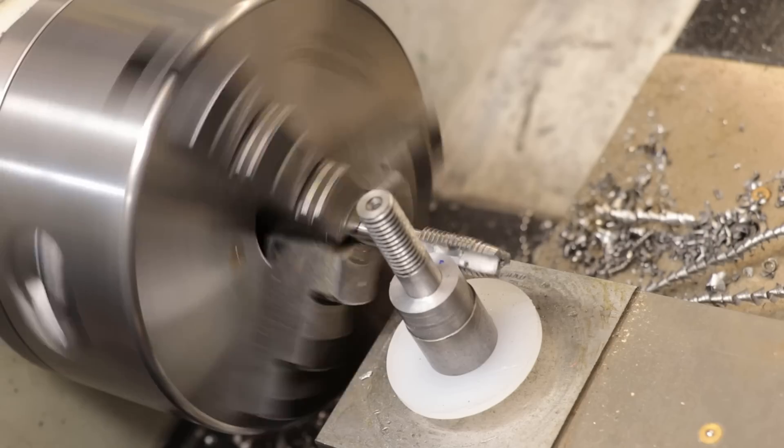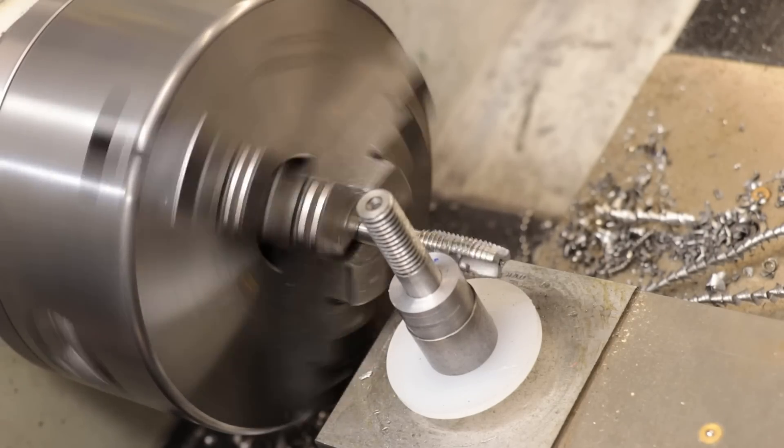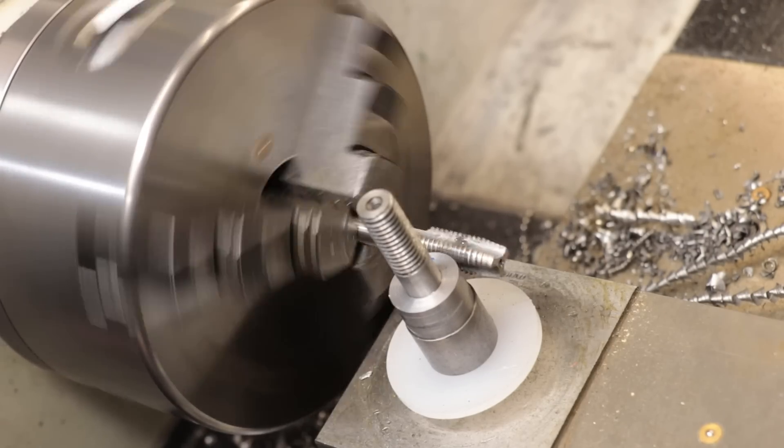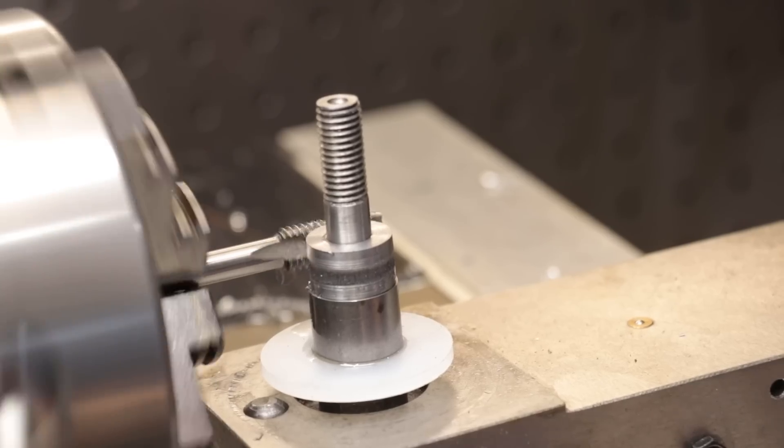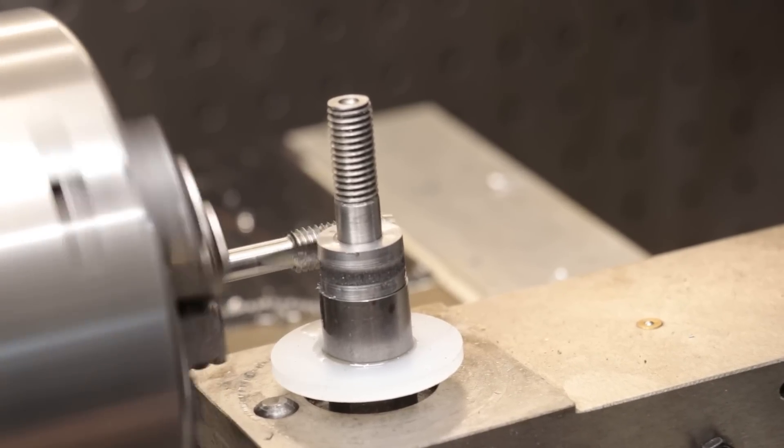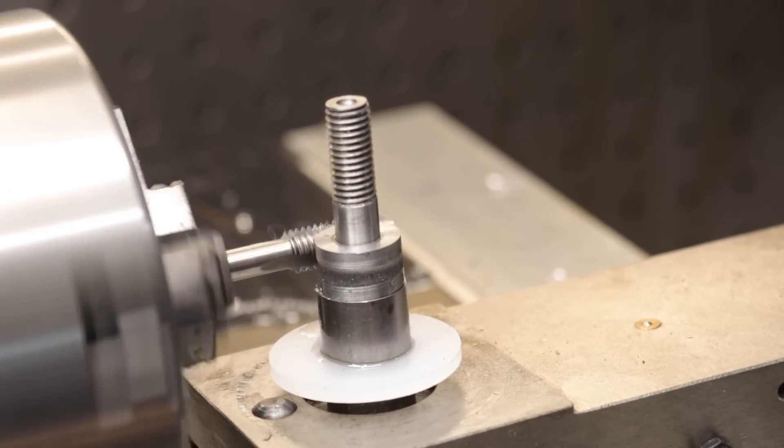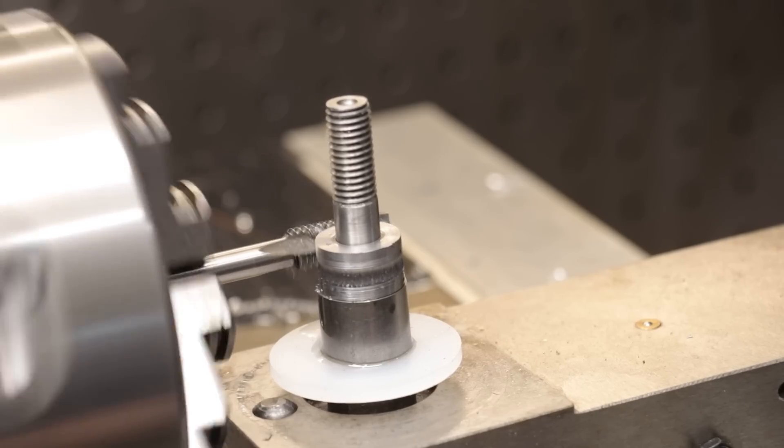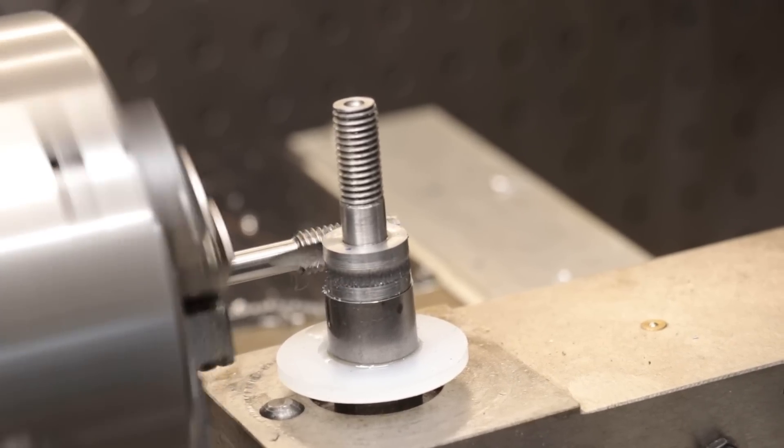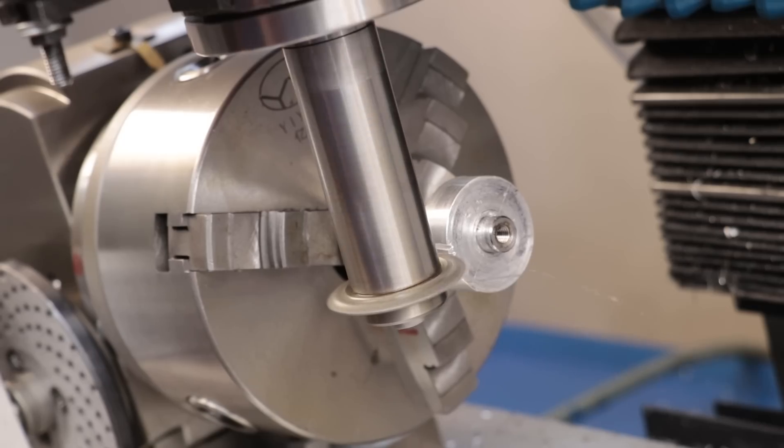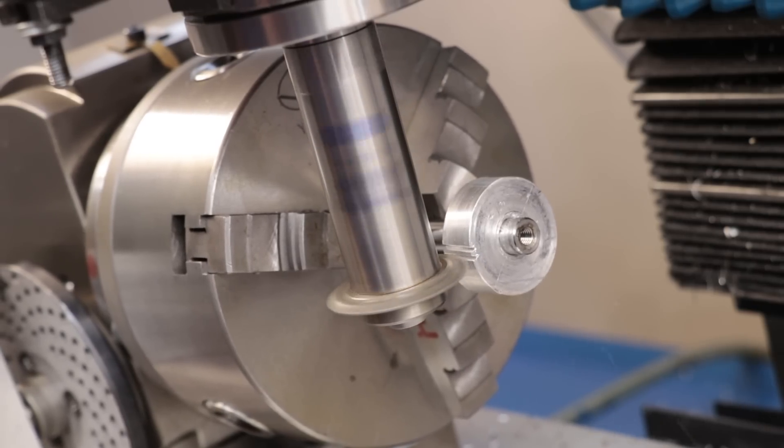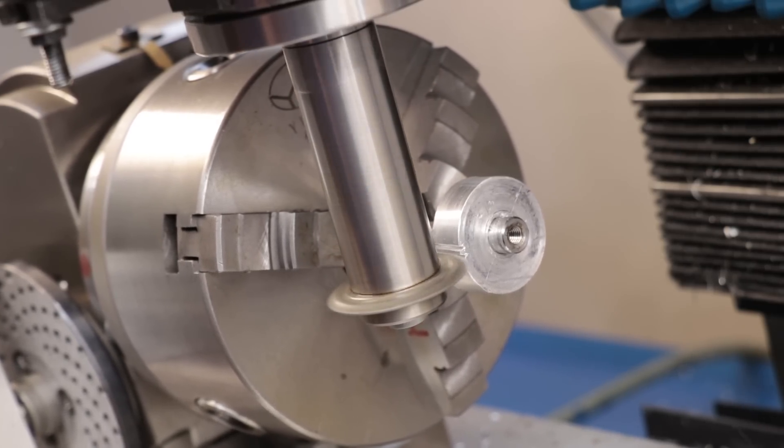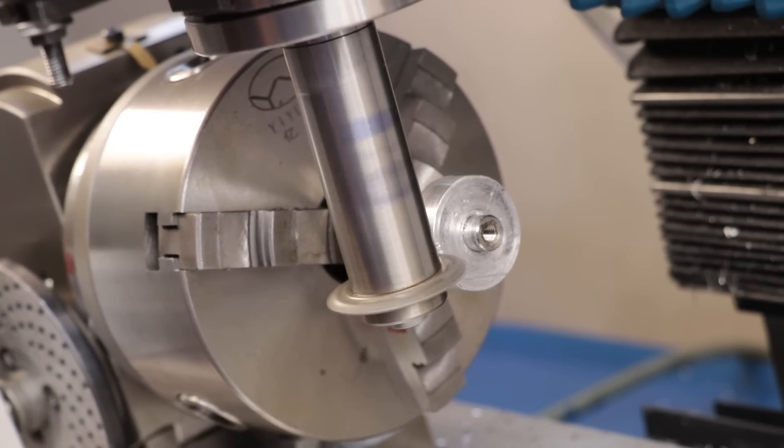Now the next issue that I ran into isn't the fault of using a tap but it is a bit of a pitfall of the free hobbing process. And that was getting enough bite so that the gear is advanced enough to get the correct spacing for the next tooth. Which it wasn't. And that's probably no surprise. I mean this tap is so small that it's probably the equivalent of a 0.5 module. Now normally I'd simply gash the gear to help it turn but I don't have a cutter small enough to effectively make that pattern.